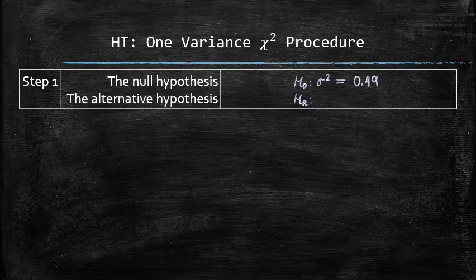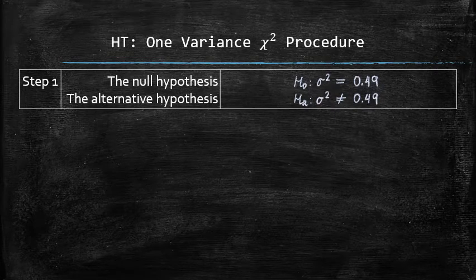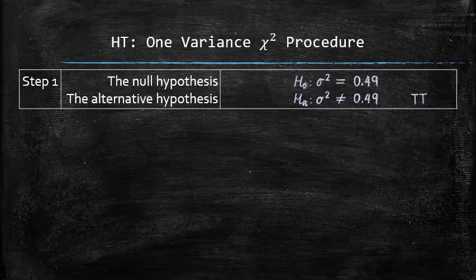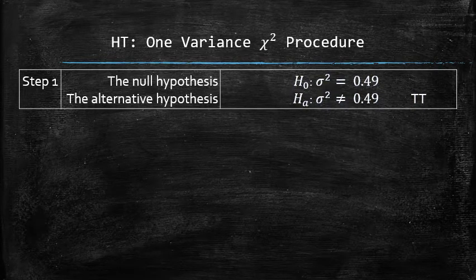Since there is not any indication of one-sided inequality in the problem, we set the alternative hypothesis as sigma-squared is not equal to 0.49. So the test is two-tailed. Step 1 is complete.